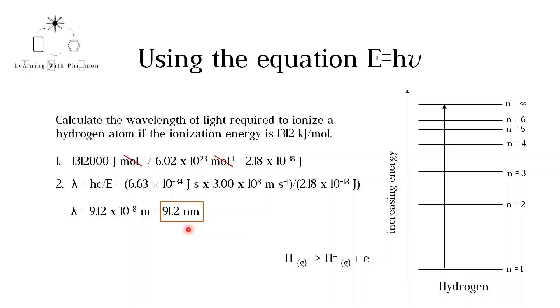In conclusion, light of wavelength 91.2 nanometers would ionize a hydrogen atom, as shown in this equation.